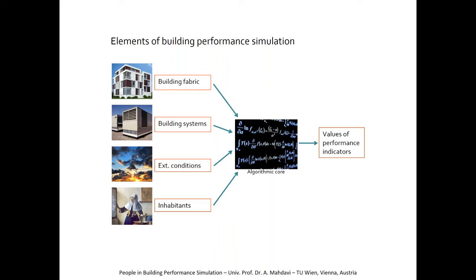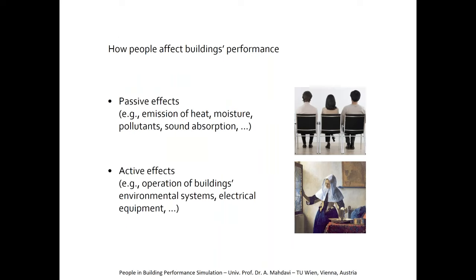Last but not least, we need to model the presence of people, and where they have degrees of freedom to interact with buildings' environmental systems, we need to represent those as well. All of those input assumptions are fed into an algorithmic system in the building performance simulation, which in turn generates values of performance indicators used to evaluate performance, make adjustments, or do parametric analysis.